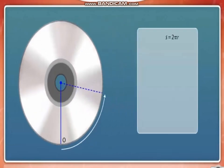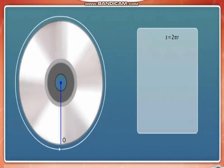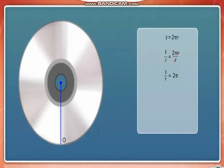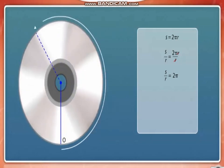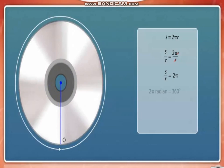When the body completes one rotation, the particle traces a distance s around the circle, which is the circumference of the circle. Dividing both sides of the equation by R, we get the equation as shown. Therefore, two pi radians correspond to an angle associated with one complete rotation, i.e. 360 degrees.